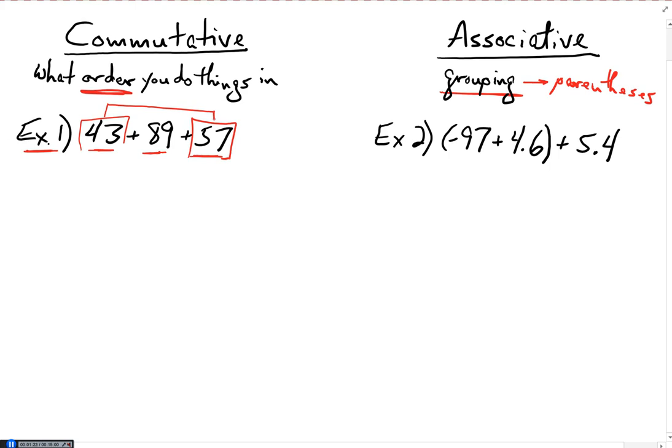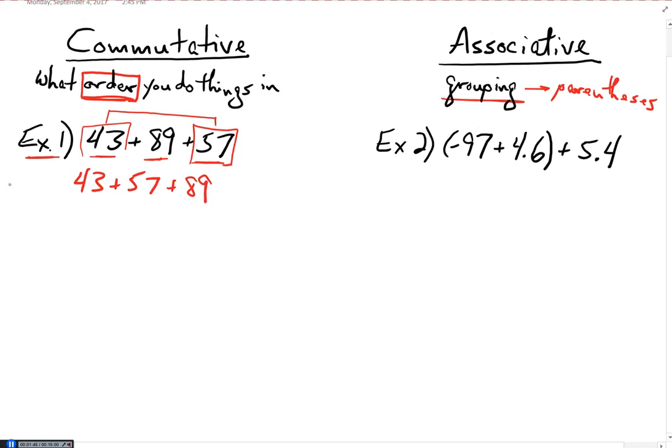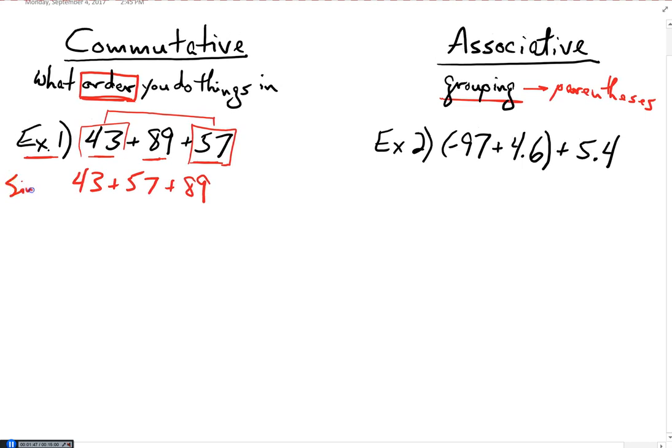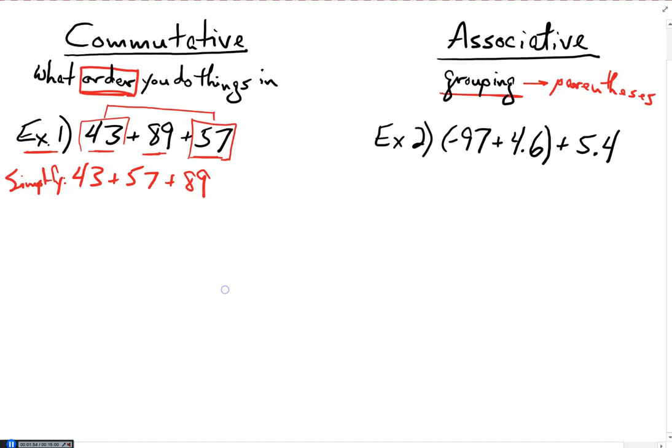Instead of adding these together in the order that they're given, what if I change the order? What if I add them together in a different order? Specifically, what if I add them together as 43 plus 57, then plus 89? Now I've just used the commutative property of addition to simplify. I just simplified my expression using the commutative property of addition.